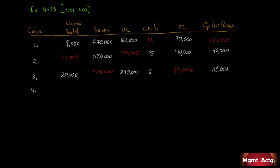Case 4: we sold 5,000 units for total sales of $160,000. We don't know variable costs or contribution margin per unit. Fixed costs are $82,000 and we have an operating loss of $12,000.